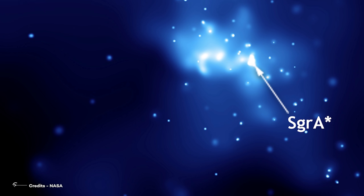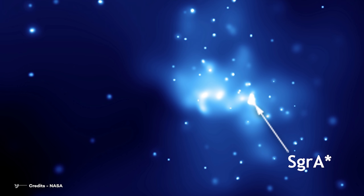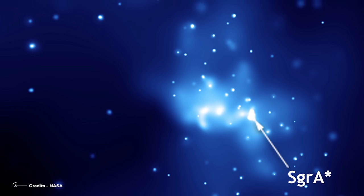It's orbiting an unusual object, a very peculiar one, Sagittarius A star, the supermassive black hole of the Milky Way. As we said, on its journey it reaches a speed of 8% of the speed of light. But what if I told you that it's not even the most amazing thing about it?